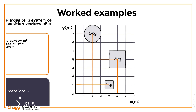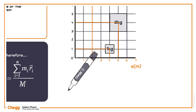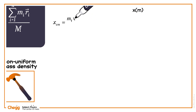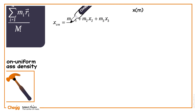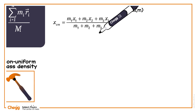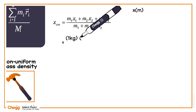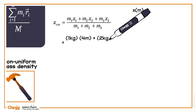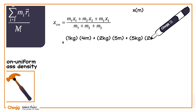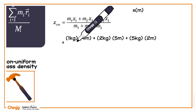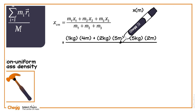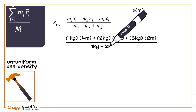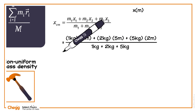First, find the x-coordinate of the centre of mass using the x-coordinates of the given masses. x_cm equals m1·x1 plus m2·x2 plus m3·x3, divided by m1 plus m2 plus m3, which equals 1 kg × 4 m plus 2 kg × 5 m plus 5 kg × 2 m, divided by 1 kg plus 2 kg plus 5 kg, which equals 3 m.